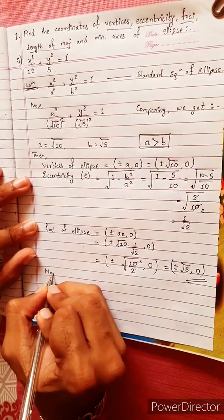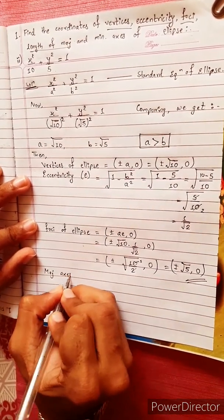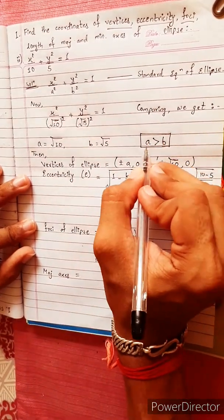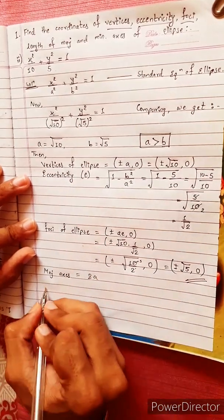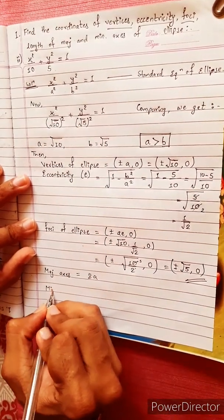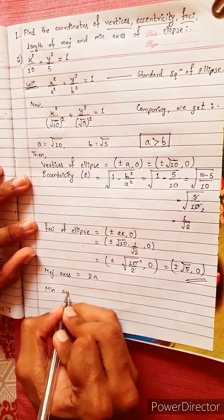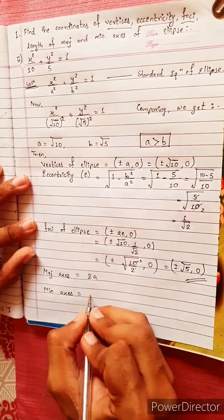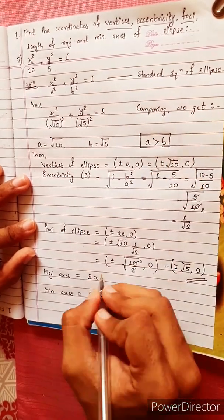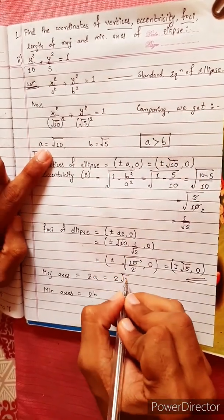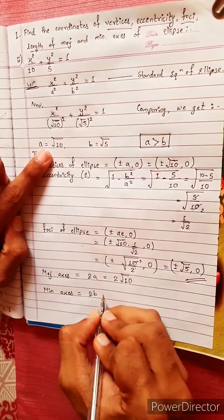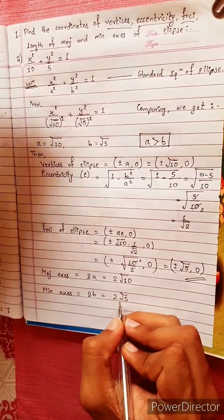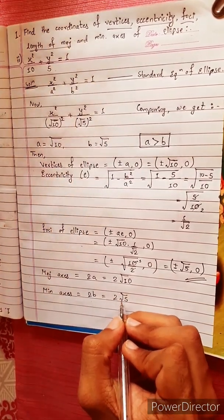We will see the length of major axis and minor axis. The length of major axis is 2A, which is 2 into under root 10. The length of minor axis is 2B, which is 2 into under root 5.